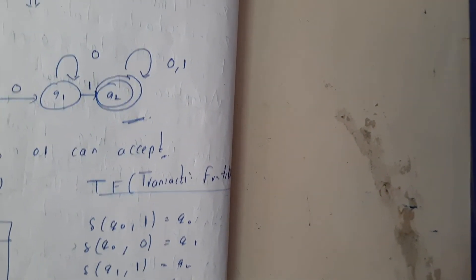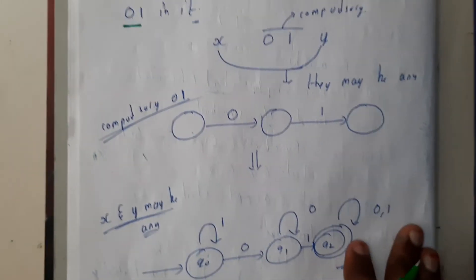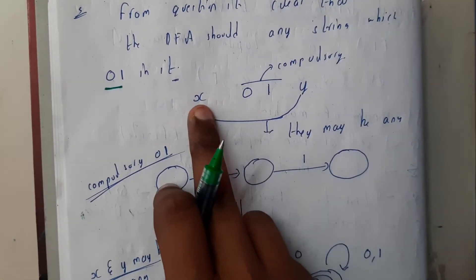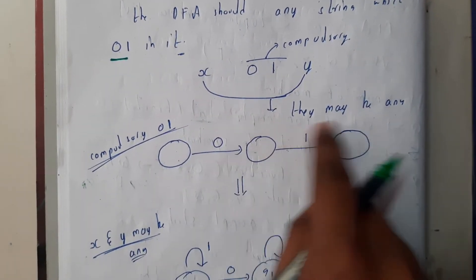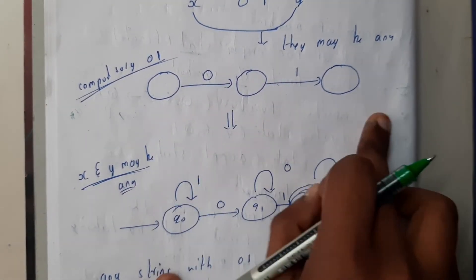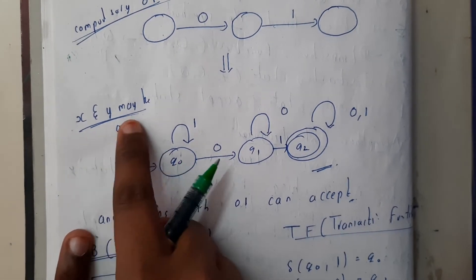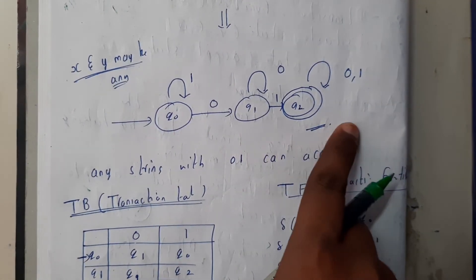In this way we are going to construct the finite automata or deterministic finite automata. If you assume x zero one y, here zero one is compulsory and x and y may be anything. So compulsory I have drawn it like this. When we add x and y, this diagram will be like this.